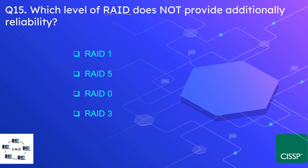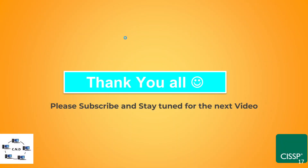The last question: Which level of RAID does not provide additional reliability? The options are RAID 1, RAID 5, RAID 0, or RAID 3. The correct option is RAID 0 — RAID 0 provides zero reliability or availability. That's all the questions from domain 7. I will upload the video for domain 8 very soon, so if you haven't subscribed, please subscribe and stay tuned for the next video. Thank you.